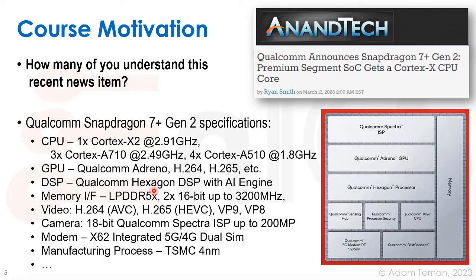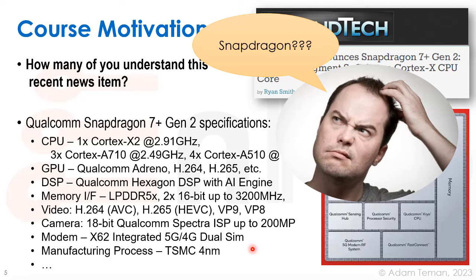It has a Qualcomm Adreno GPU, a Qualcomm Hexagon DSP with an AI engine, and a memory interface including LPDDR5X with 16 bits up to 3200 megahertz. It has all kinds of video support, camera support up to 200 megapixels, an integrated 5G and 4G dual-SIM modem, and it was manufactured in a TSMC 4 nanometer process. And I bet a lot of you are going — Snapdragon? What is that?